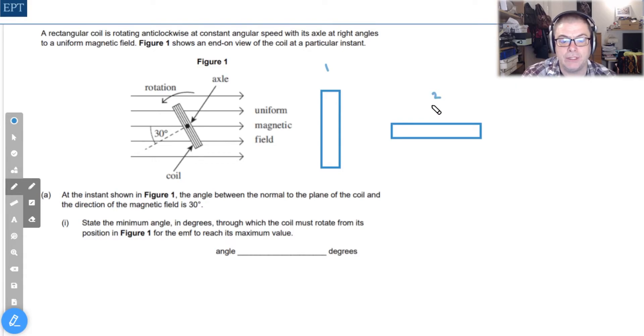In position one I think it's straightforward enough to see that that is the position where most lines are going through the coil as it turns. Therefore in position one we can say the flux linkage or EMF is at a maximum.